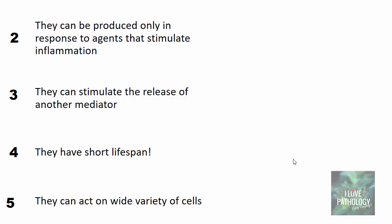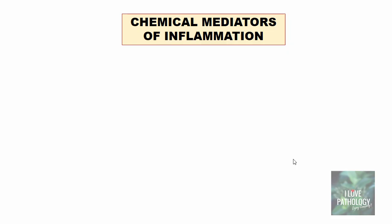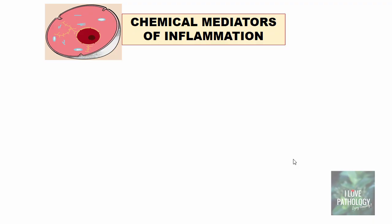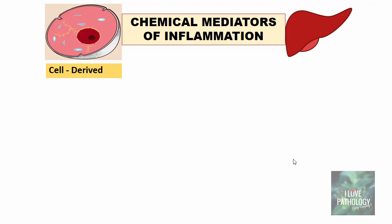The last important feature is they can act on a wide variety of cells. The mechanism of action can be the same in all these targets or different in each of these targets — basically, they have different effects on different types of cells. Now, let us see what are the different chemical mediators of inflammation. As I mentioned, they can be cell-derived or plasma-derived.